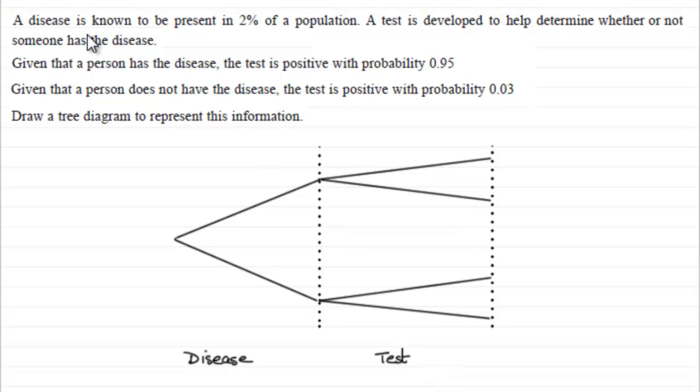We know that the disease is known to be present in 2% of the population. So we can fill these branches in very easily because we can just say that the probability that someone has the disease, we'll call it D for disease, we know is 0.02, 2% chance then.